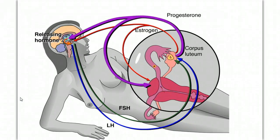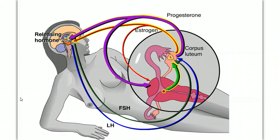If the egg is fertilized, it starts to develop and implants in the wall of the uterus. The embryo secretes a hormone called human chorionic gonadotropin, HCG for short. HCG functions like LH to signal the corpus luteum to continue its secretion of estrogen and progesterone. Later, the placenta takes over this function. Progesterone and estrogen maintain the lining of the uterus and suppress the development of any more follicles. In effect, the embryo signals the corpus luteum to stick around, maintaining the uterus for embryonic development and stopping the monthly cycle.